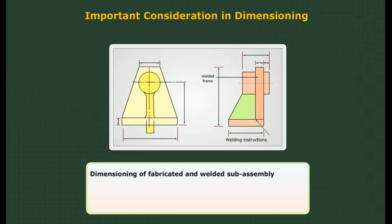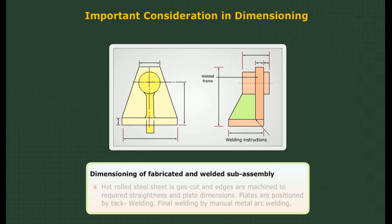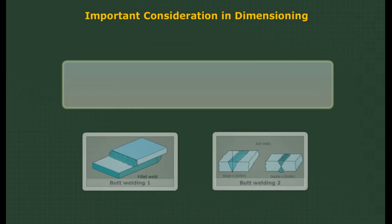Dimensioning of fabricated and welded sub-assembly: An example of such construction could be a frame for a machine. Hard-rolled steel sheet is gas cut, and edges are machined to required straightness and plate dimensions. Plates are positioned by tack welding, followed by final welding by manual metal arc welding.